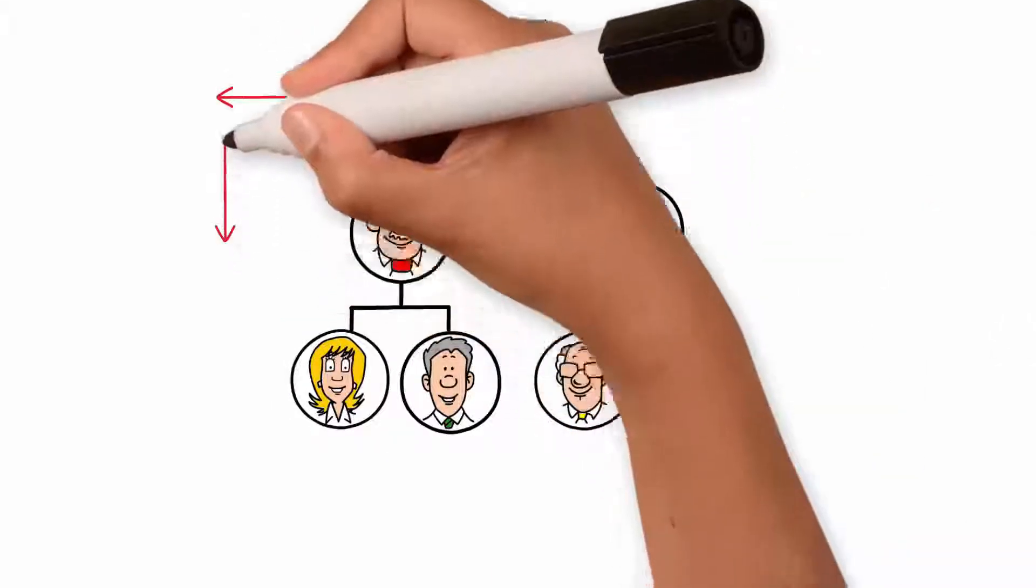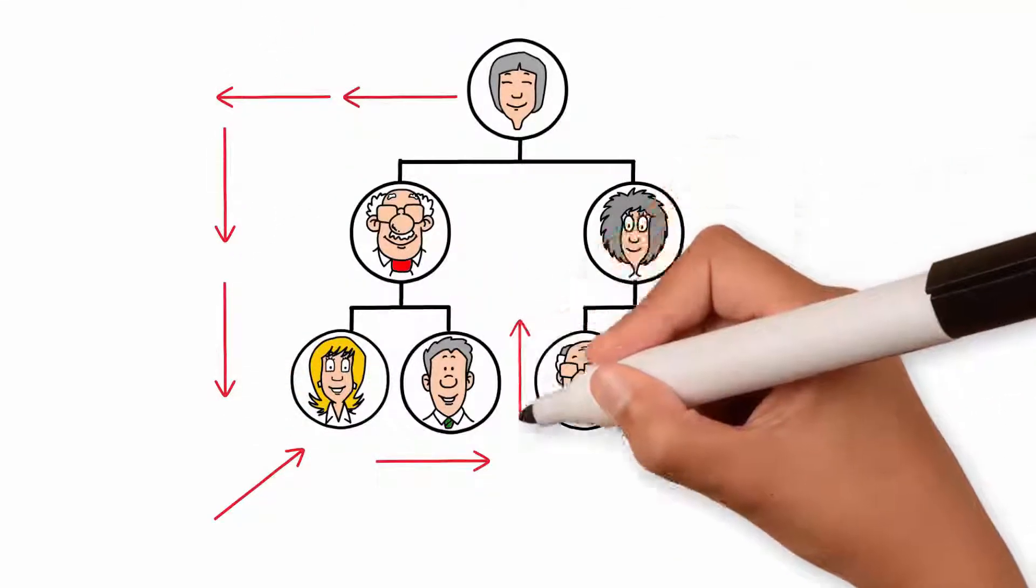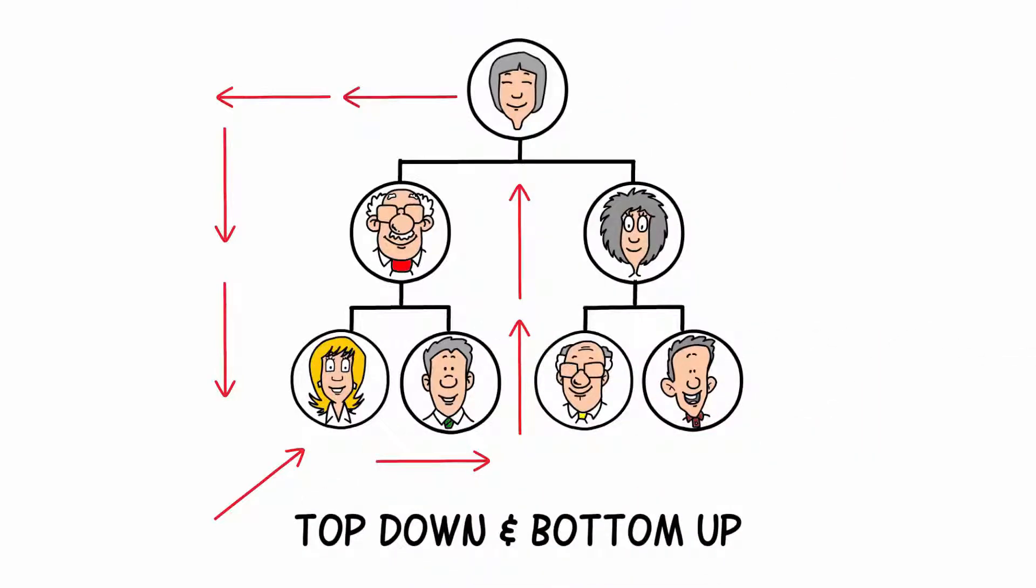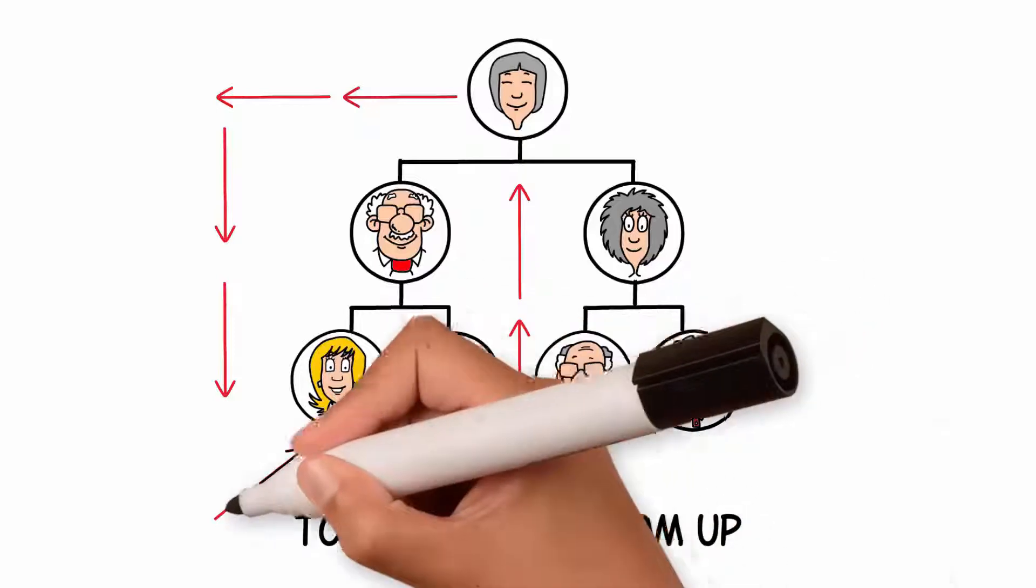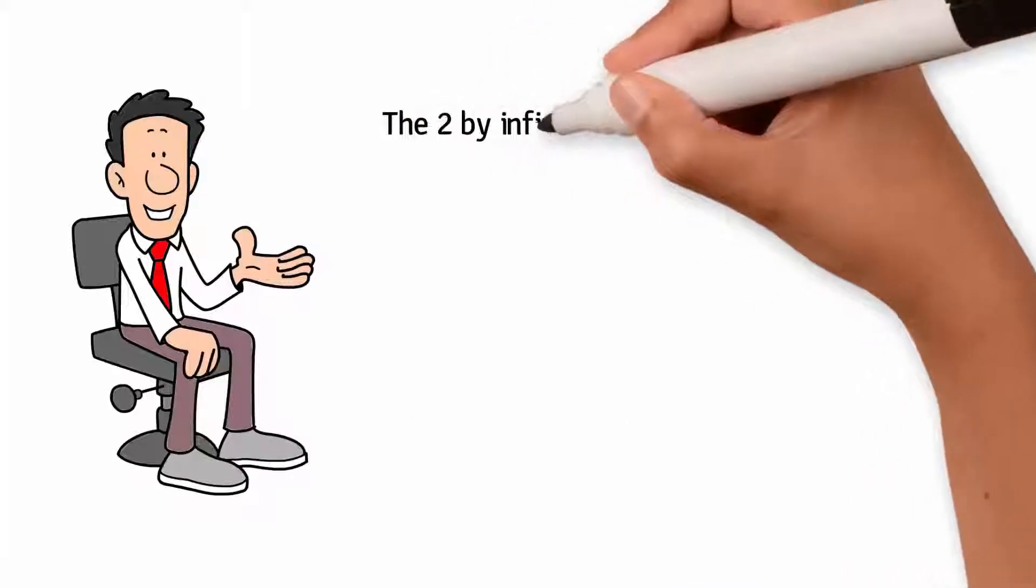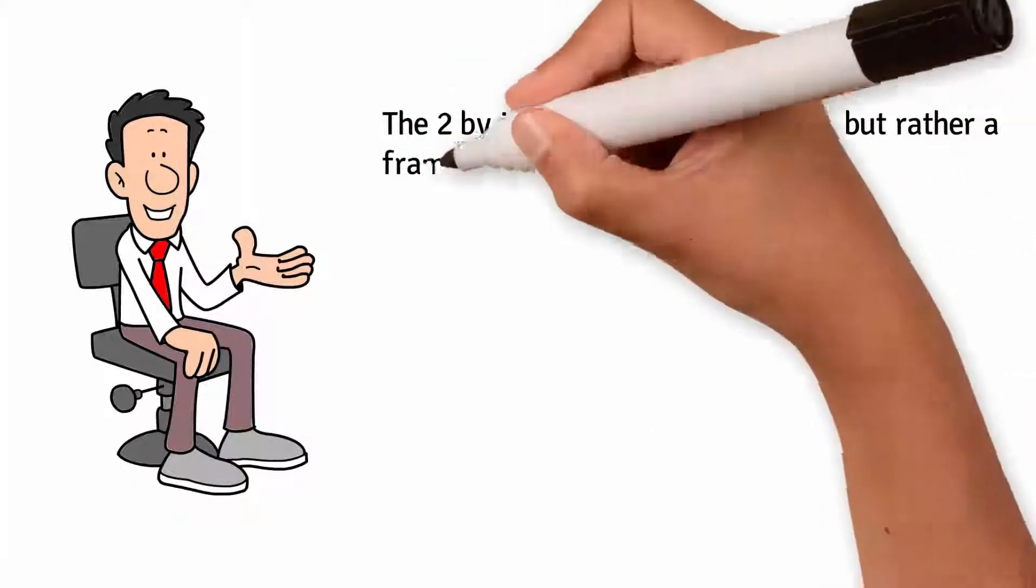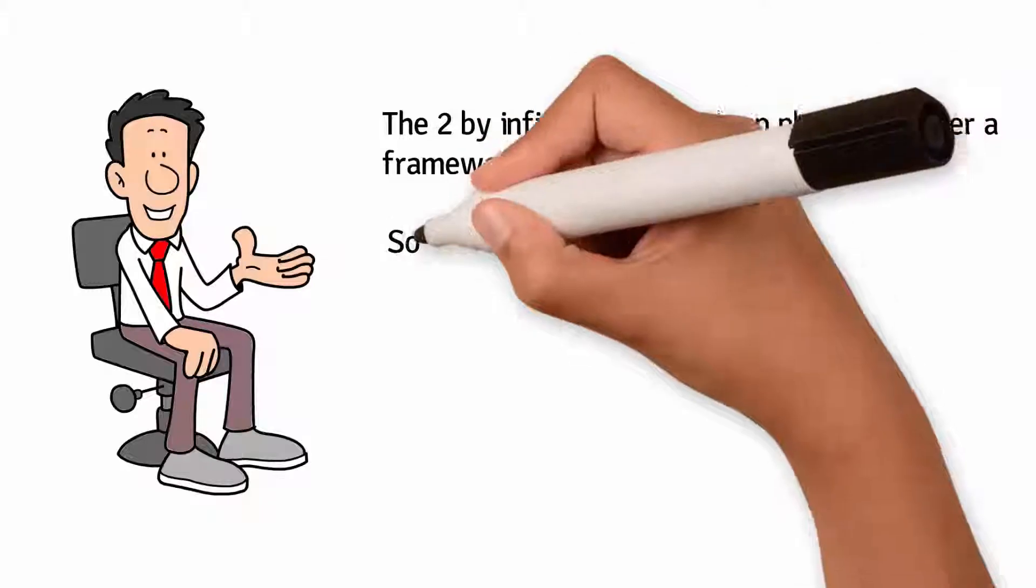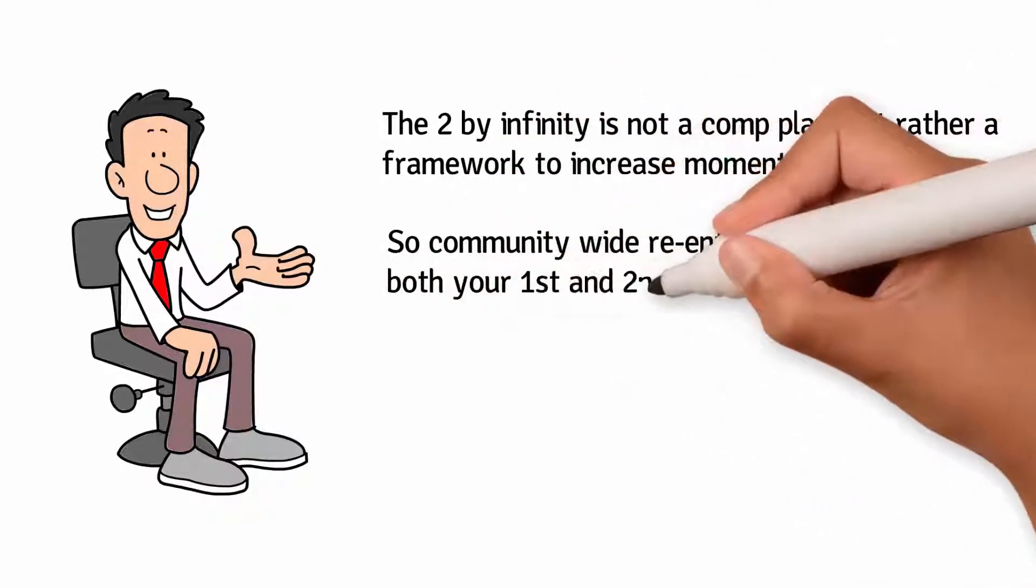Here's the cherry on top of it all. More Crypto has designed the first ever top-down and bottom-up matrix accelerator to put the power of our global community to work for you. Once a person orbits, they do not follow their sponsor into the next matrix like a traditional matrix. Instead, each time a person orbits, they go up to the highest open spot in a 2x2 and a 2x6 inside the global community 2x infinity structure. The 2x infinity is not a comp plan, rather it's a framework used to increase momentum inside the community.